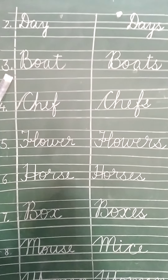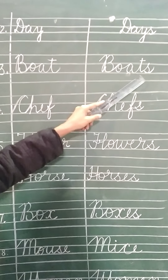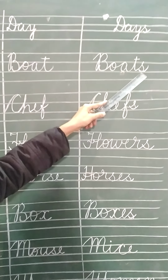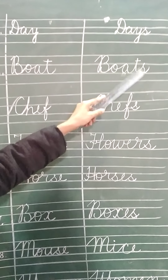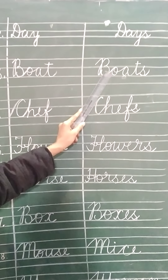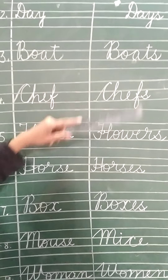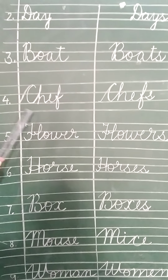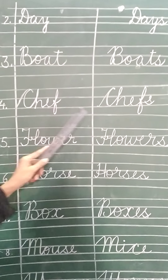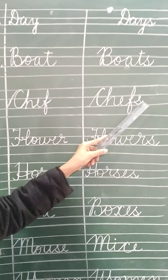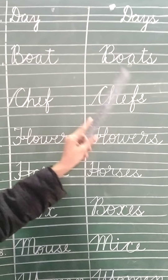The third word is boat — B, O, A, T. Again we add only S and it becomes plural: boats — many boats. Next, ship — S, H, I, P. We add S only, and it becomes plural: ships.